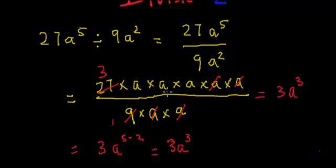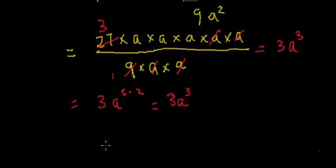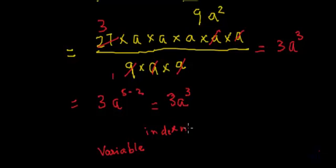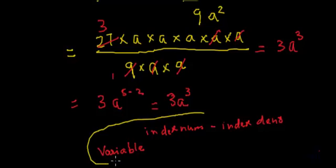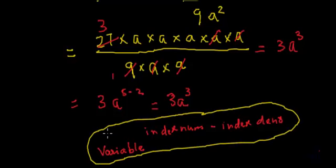This gives us 3a to the power 3. So when we have the same variable in both numerator and denominator, the variables behave such that we take the index of the numerator minus the index of the denominator. This is the way variables behave in division. If we remember this, our division will be very easy and we can do it very fast. This was a simple example of division.